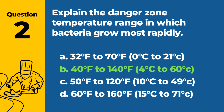Answer: b. 40°F to 140°F, 4°C to 60°C. The danger zone temperature range where bacteria grow most rapidly is between 40°F and 140°F, 4°C and 60°C.